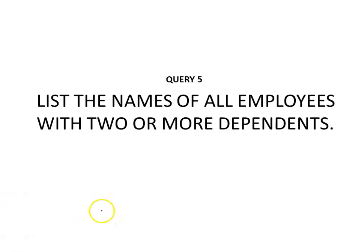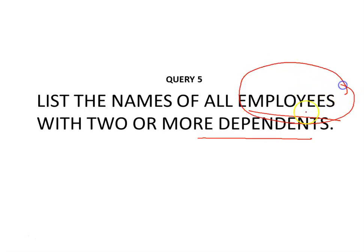In this query, list the names of all employees with two or more dependents. The query requires the employee relation and the dependents relation — specifically the names of only those employees with two or more dependents. Strictly speaking, this query cannot be done in the basic original relational algebra; we have to use the aggregate function operation with the count aggregate function.